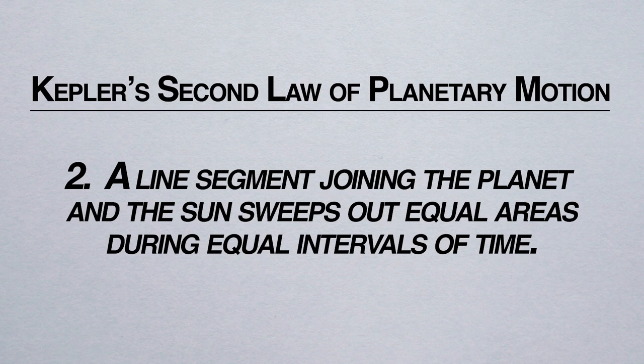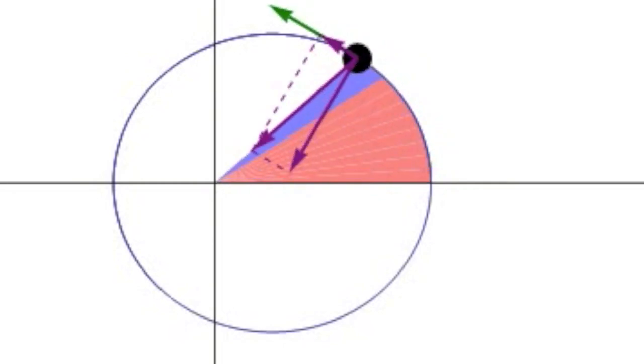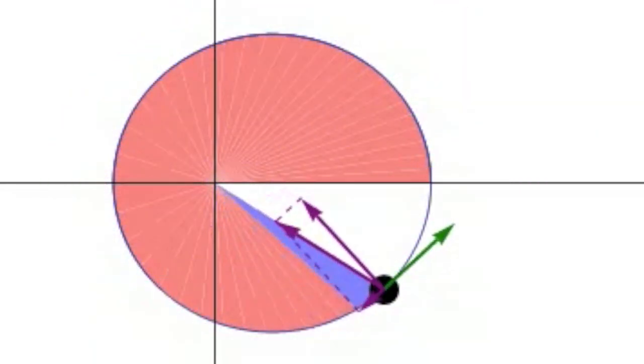Looks about right to me. Kepler's second law of planetary motion basically tells us that a planet's orbital velocity varies with distance. So a planet will move fast when close to the star, and slow when further away, like so.